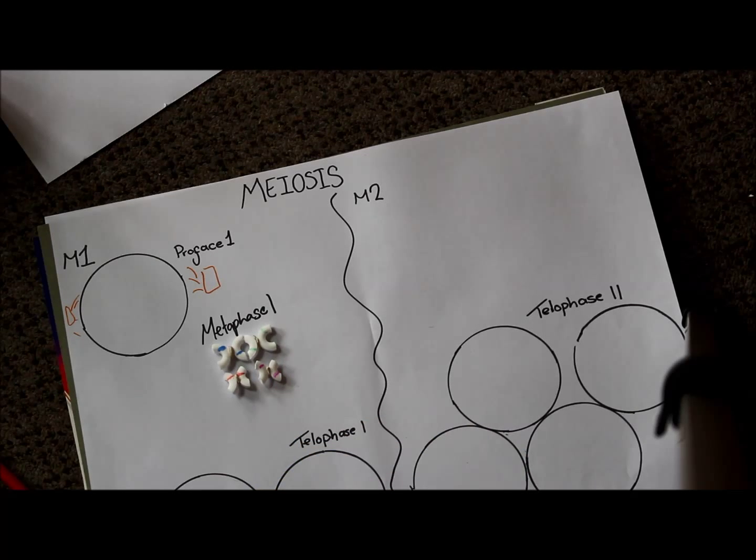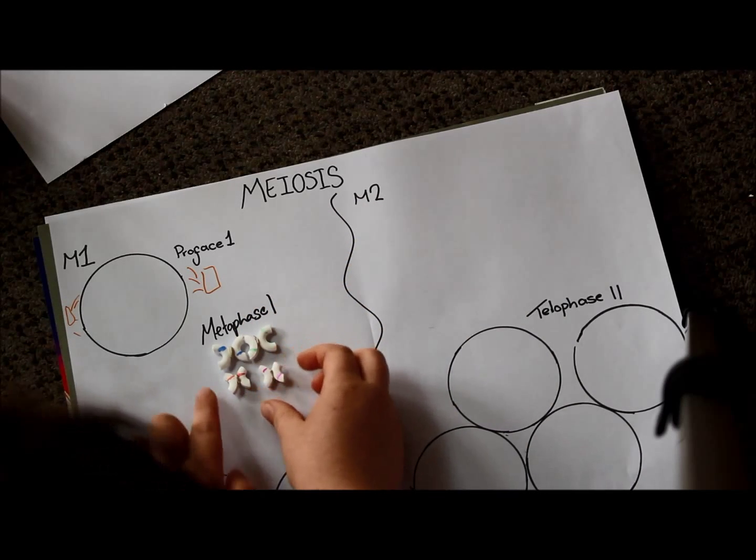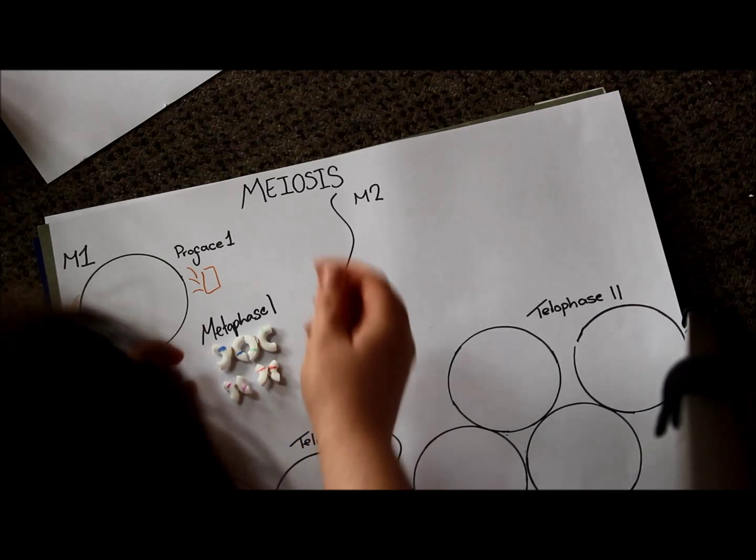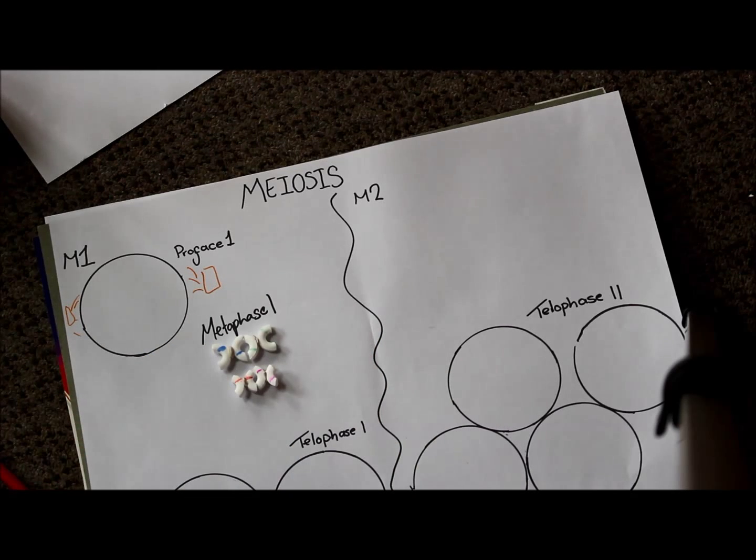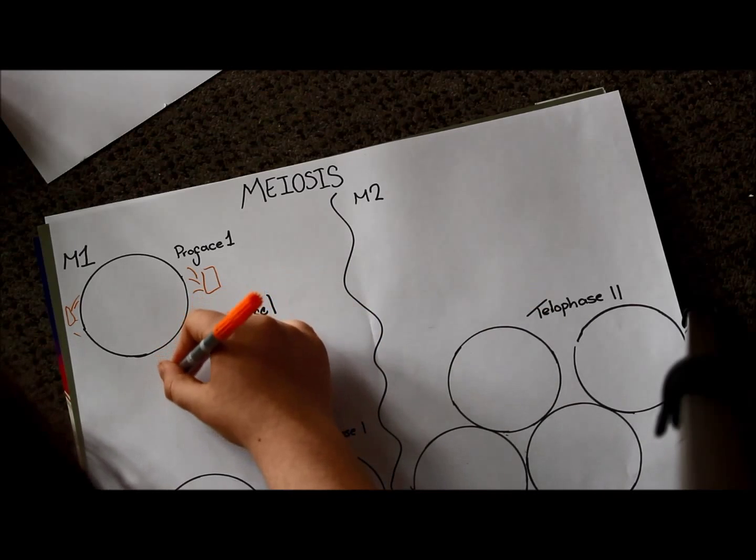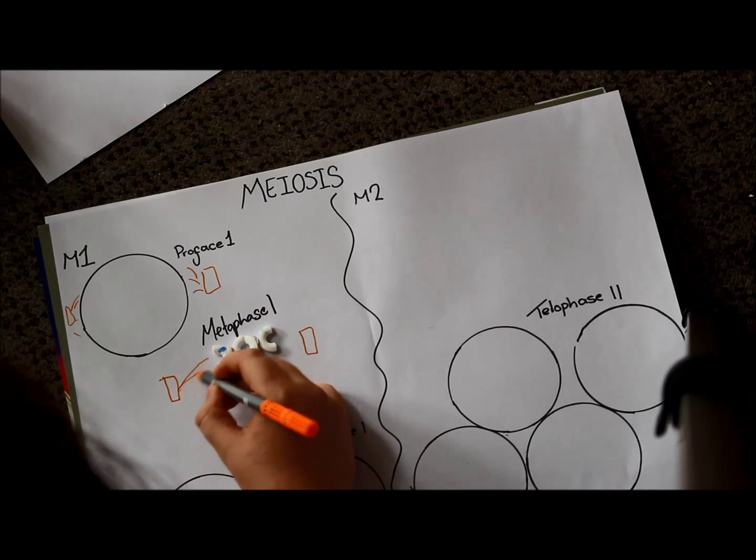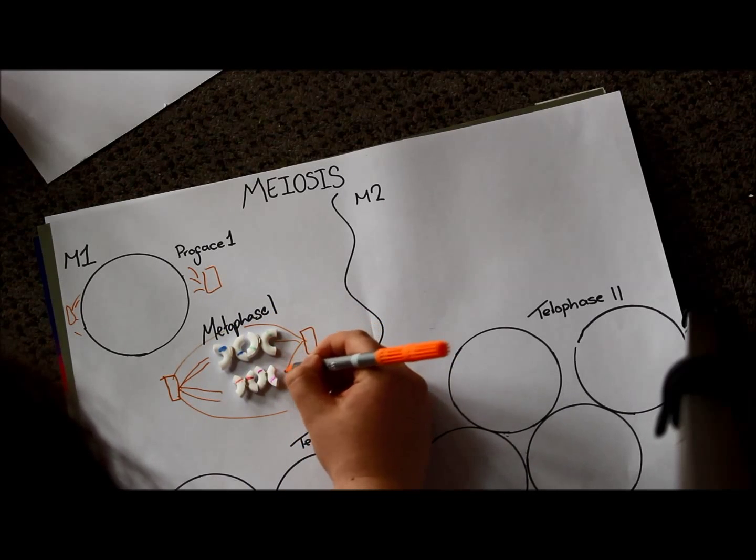Now, also here you get something called random segregation, which basically means it depends on which way around these sit on the equator. Maybe they sit like that, or maybe they sit that way around. And once they've crossed over, that means you get a variety of different genes on one side. Again, this ensures that you've got a large range of DNA in the cells you create. Spindles form just like metaphase in mitosis.